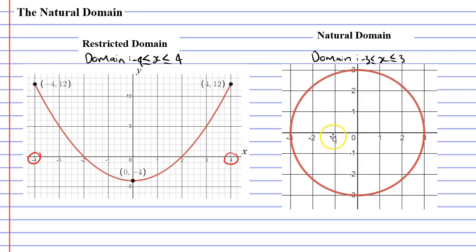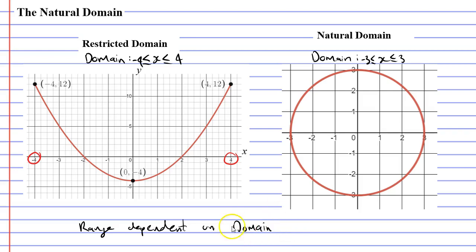You may also notice that both of these graphs have a range, but we never talk about a restricted range or a natural range. The range is dependent on what the domain will be. So in general, we really just talk about the domain, because when we put restrictions on the domain, we end up getting restrictions on the range as a result of that.